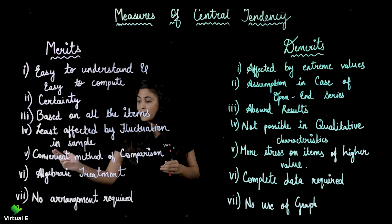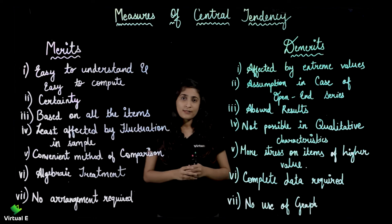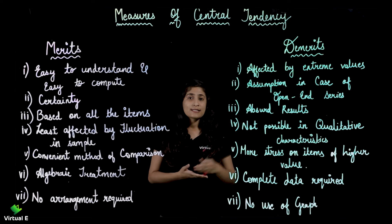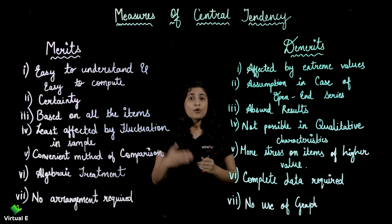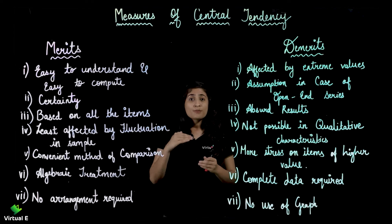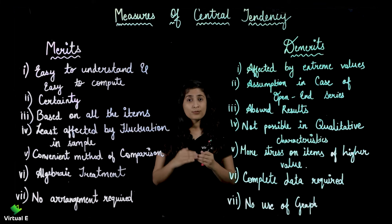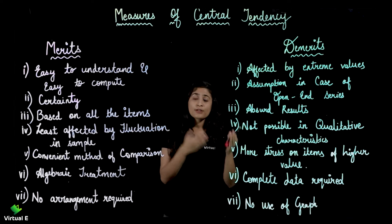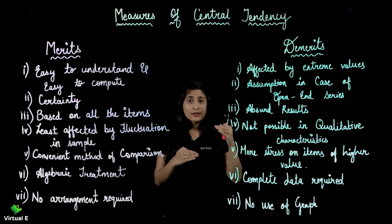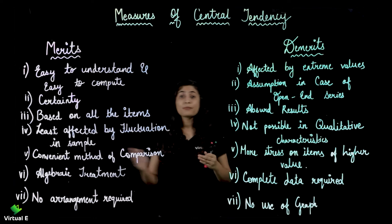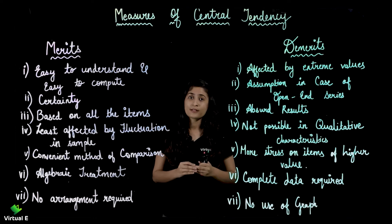The next merit is convenient method of comparison. We have seen individual series, discrete series, and continuous series, where we had one distribution. Then we saw combined mean, where two or more distributions can be involved. So whichever distribution you are given, you can choose your convenient method of comparison accordingly.